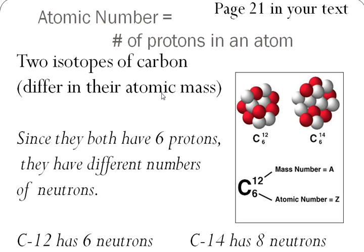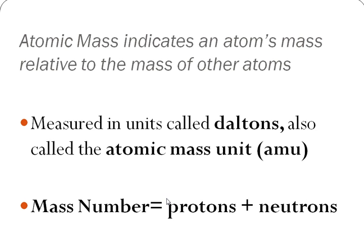That means they have different atomic masses. So carbon-12 only has 6 protons and 6 neutrons. Carbon-14 has 6 protons and 8 neutrons to add up to 14 total in that nucleus. We'll do some more examples of that. So isotopes just have different numbers of neutrons.